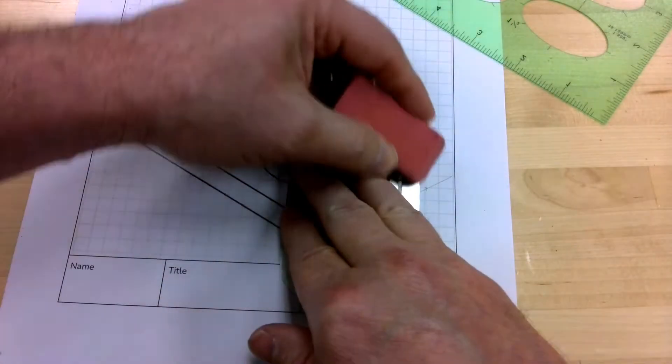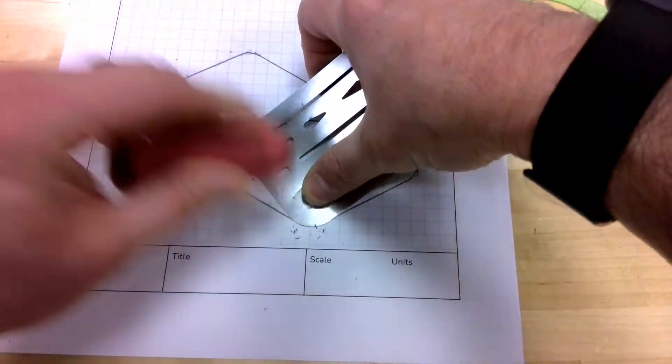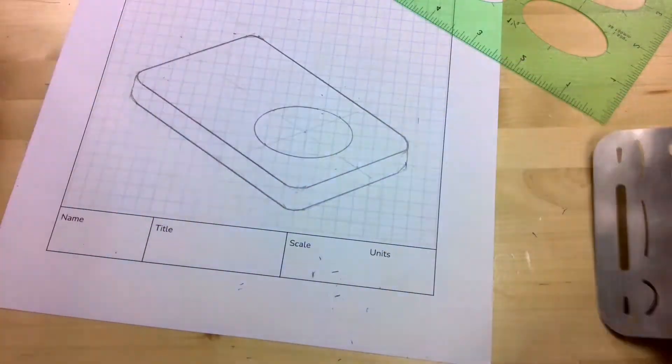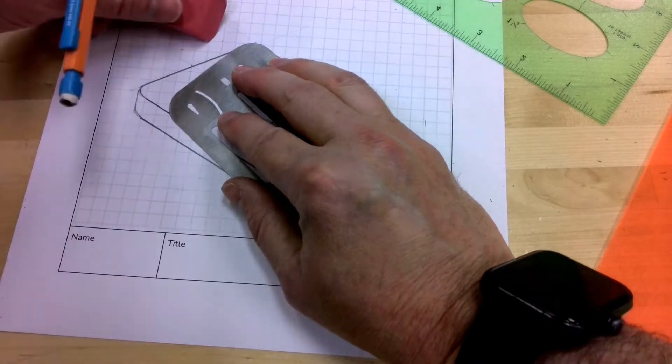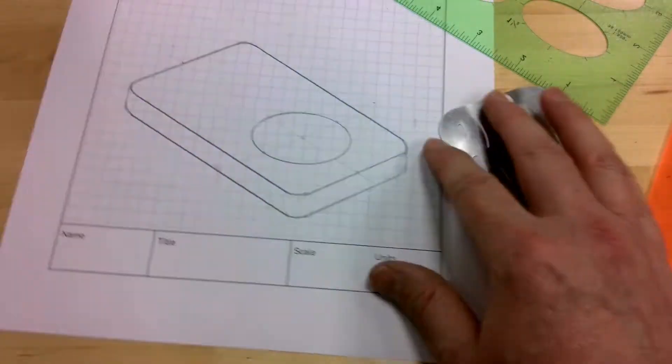We can clean up our drawing as needed with our eraser shield. I don't want to erase my guidelines completely, just make them not quite so dark.